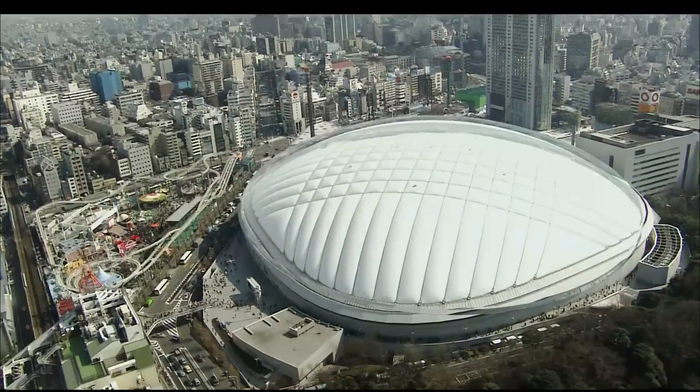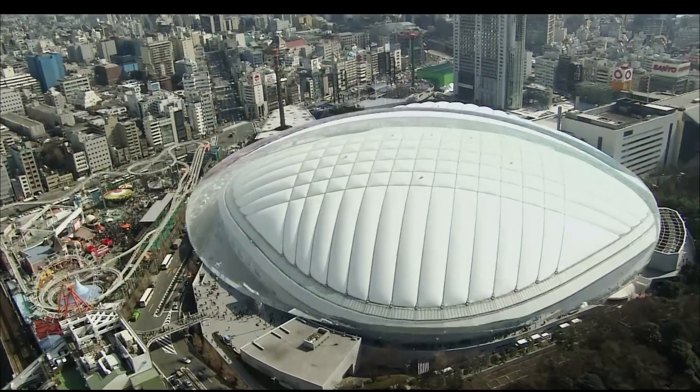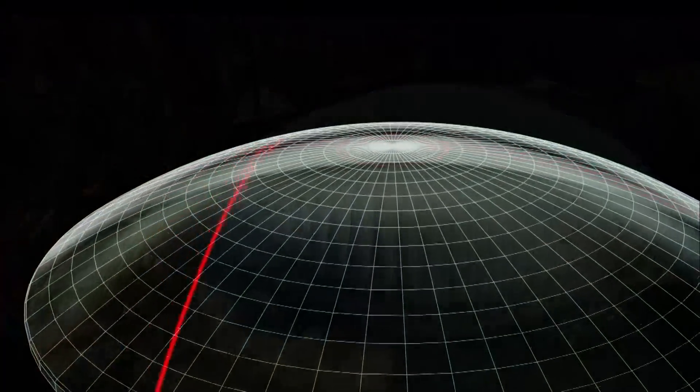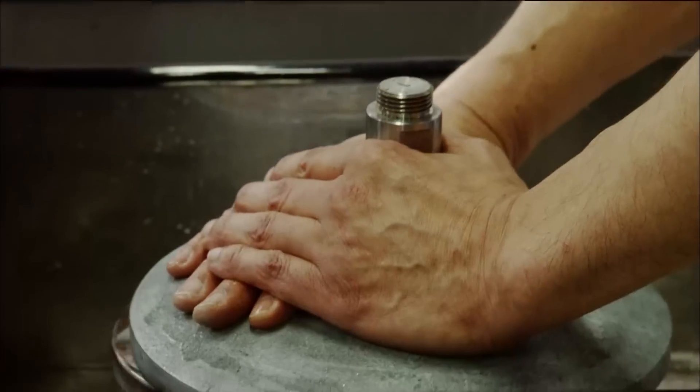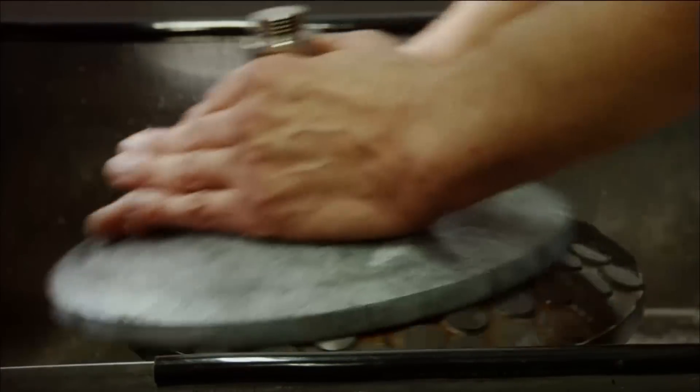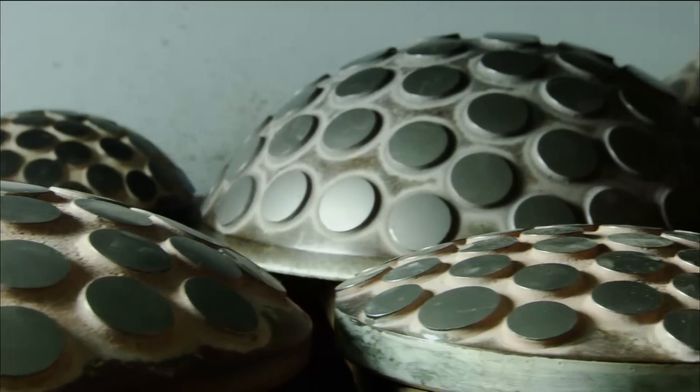For example, a polished lens enlarged to the size of a baseball field would have deviations in surface accuracy less than the thickness of a postcard. The use of a polishing dish enables a level of polishing precision exceeding one one-thousandth of a millimeter.